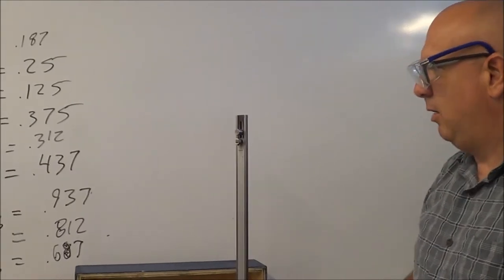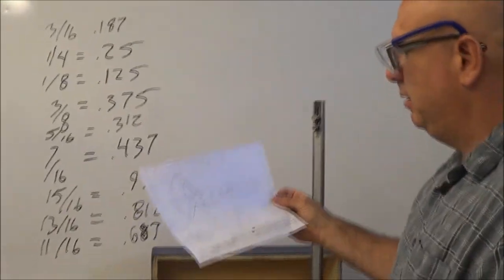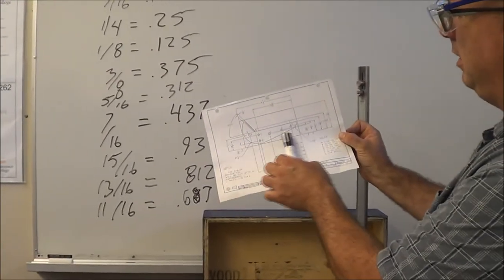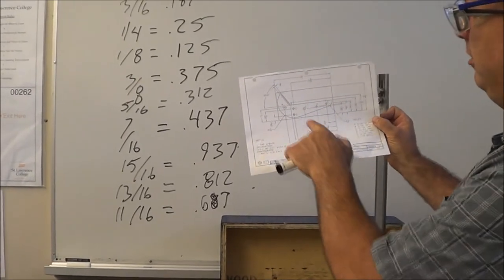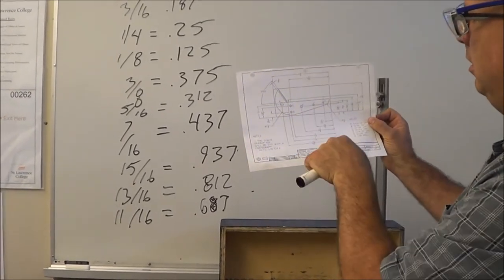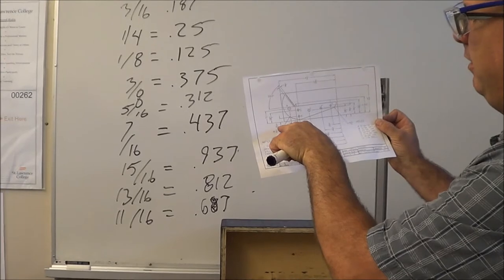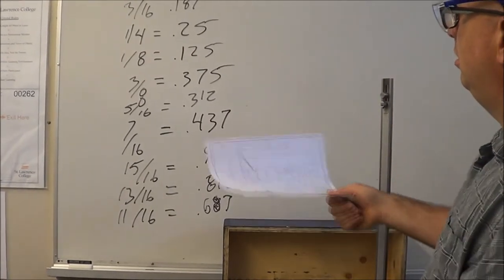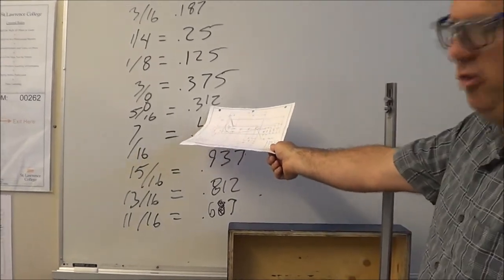So what we're going to do now is I'm going to find my height from the bottom here to the first hole, D. I'm going to find that it is five sixteenths of an inch. Five sixteenths is decimal 312.